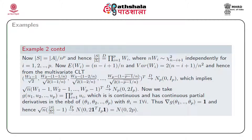We take the G function as G(u_1, u_2, ..., u_p) = product from i=1 to p of u_i, which is continuous and has continuous partial derivatives in the neighborhood of theta_1, ..., theta_p. Here theta_i equals 1 for every i. The gradient vector of G at (theta_1, ..., theta_p) is a vector with all components equal to unity. Hence sqrt(n) * (det(S)/det(sigma) - 1) converges in distribution to a normal distribution with mean 0 and variance 2p.